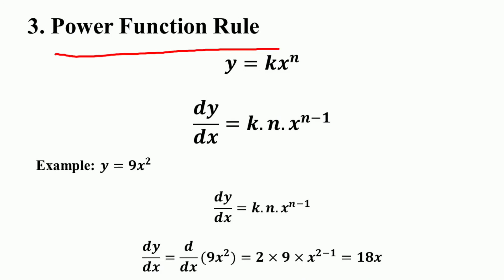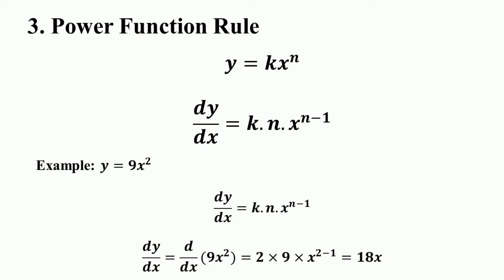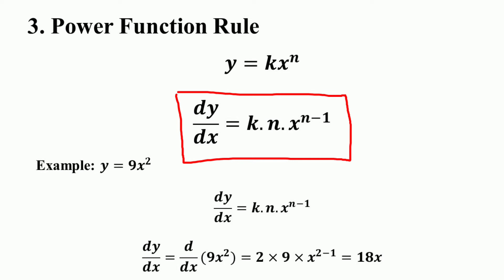The third rule of differentiation is the power function rule. The derivative of a power function — for example y = kx^n, where k is the constant and n is any real number — is equal to the coefficient k times the exponent n, multiplied by the variable x raised to the power n - 1. That is, if y = kx^n, then dy/dx = k · n · x^(n-1).